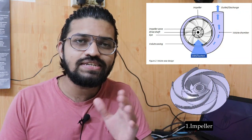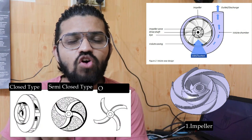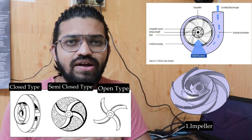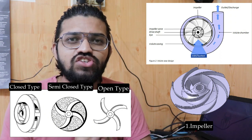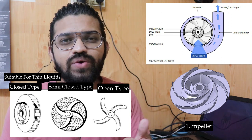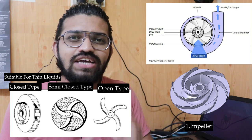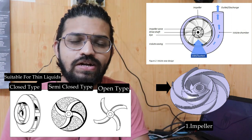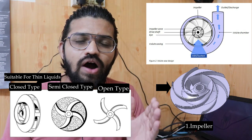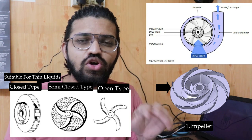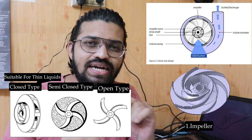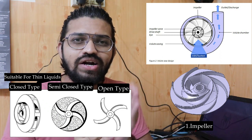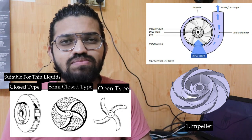The impeller is the heart of the centrifugal pump and continuously rotates. It can be of closed type, semi-closed type, or open type. The closed type has two discs with impeller blades squeezed between them, allowing only a thin layer of liquid to circulate. The semi-closed type is suitable for water or fluid containing suspended solid particles such as debris. The open type has continuously open blades and is suitable for higher viscosity fluids and fluids containing a higher amount of solid particles.